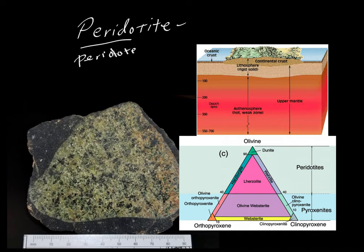Let's see if we can spell it correctly. That is a D. So peridote is the gemstone name for the mineral olivine.